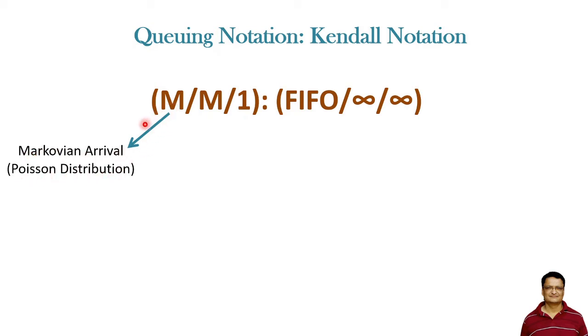The arrival pattern or arrival distribution is given by this Poisson distribution in this case. The next is the service time distribution and that is represented by the exponential distribution.